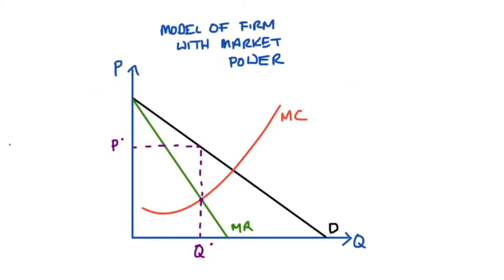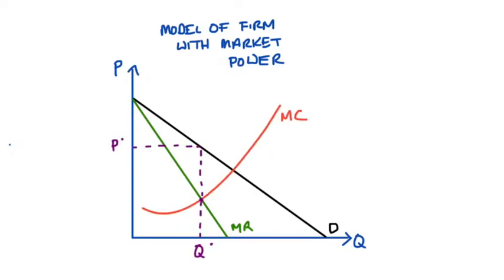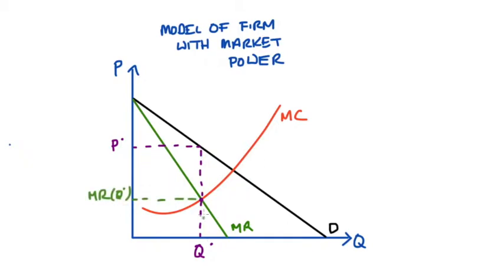Here is our model that shows the pricing decisions of firms with market power, so either monopolists or monopolistically competitive firms. We have our demand curve, our marginal revenue curve, and our marginal cost curve. The pricing decision is to set the quantity such that marginal revenue is equal to marginal cost, and we charge as much as we can, so we read the price off from the demand curve. For a particular outcome, the total revenue, which is P times Q, will be this rectangle here. The marginal revenue we just read off from the graph, and our average revenue is equal to the price.